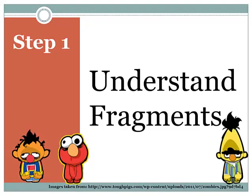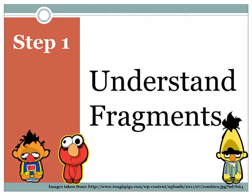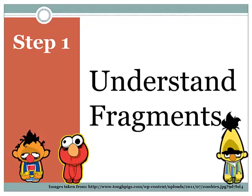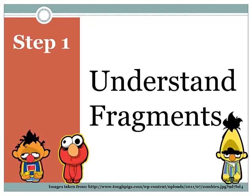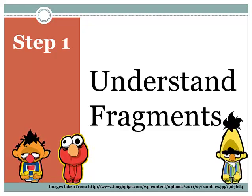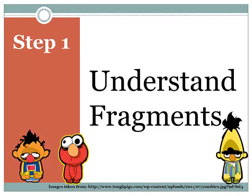The first thing is understanding fragments. Just like in the Walking Dead, you need to understand who is a zombie and who is not — you're looking for little clues. A fragment is any sentence that does not express a complete thought. It might look great, just like an infected person before they go crazy. Having a capital letter and a period at the end does not make it a sentence if it does not express a complete thought, even if it looks like it has a subject and a verb.